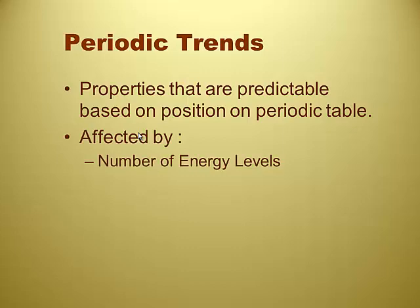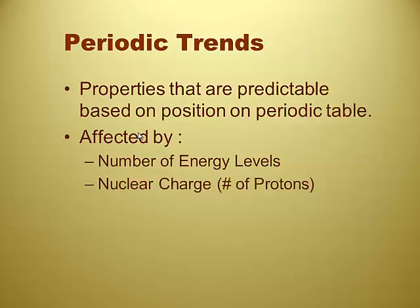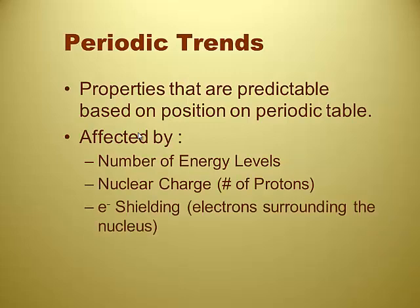They're affected by a few things. One, they're affected by the number of energy levels that an atom has, because the energy levels go one through seven — basically how many concentric clouds are around it, or orbitals. Nuclear charge — the number of protons in each element. Electron shielding, which is the amount of electrons in between the nucleus and the outermost valence electrons — the core electrons. And also electron-to-electron repulsion, because they're the same charge, so they repel each other.